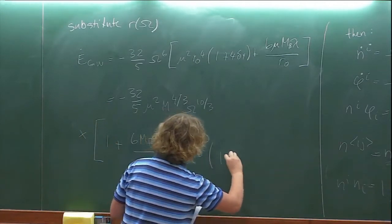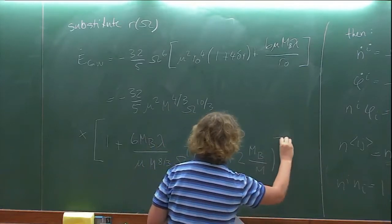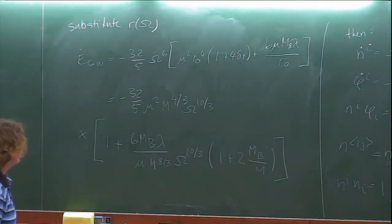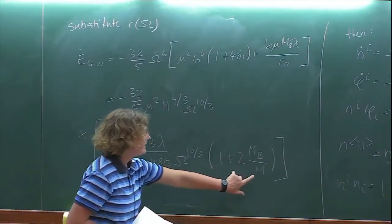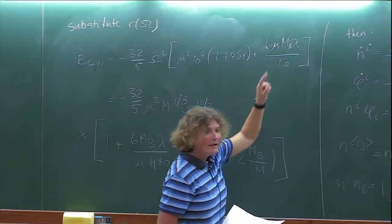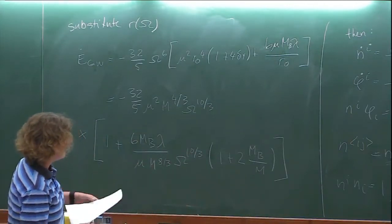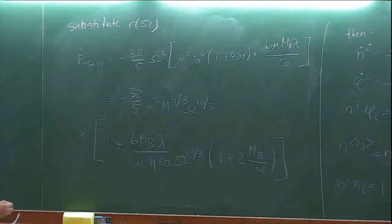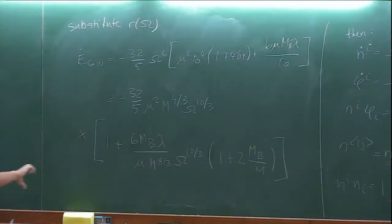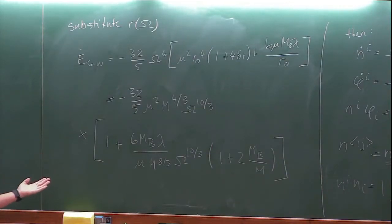This correction has a different mass dependence than the simple m_B^2 because delta_r depended on m_B^2 while the flux formula had only m_B, giving a combined mass dependence here. So now we have a result for both the orbital energy and the gravitational wave energy loss. The last thing to solve today is the decay of the orbit.